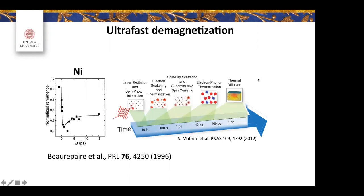I'm sure most of you have heard of it. If you go back to 1996, it was first found using an ultrashort laser that you were able to demagnetize nickel in a couple of hundred femtoseconds, which was a bit of a surprise since magnetization is angular momentum and it needs to be conserved. That it happens so fast was a bit surprising.